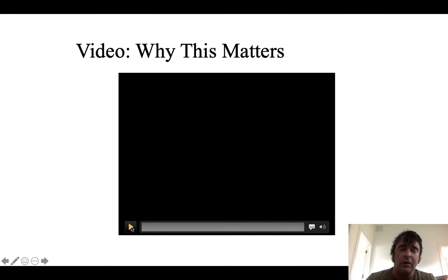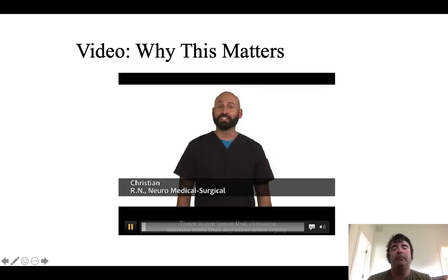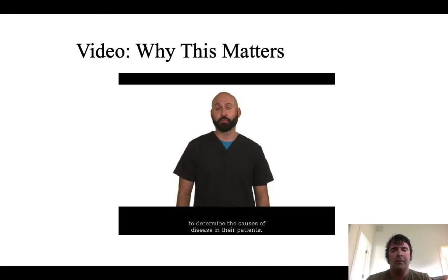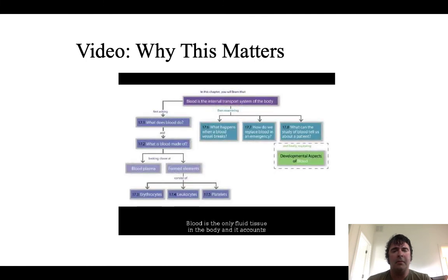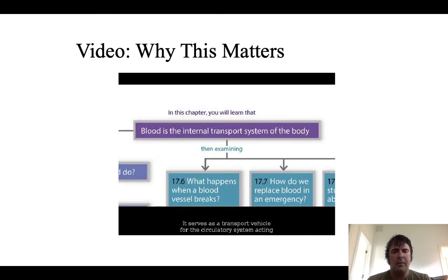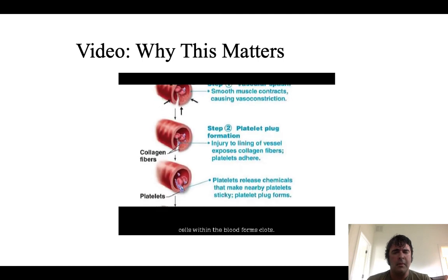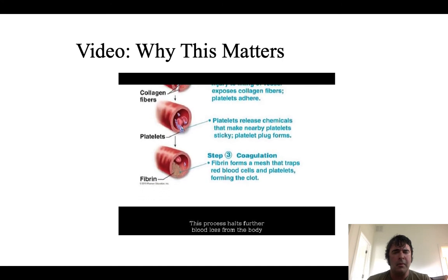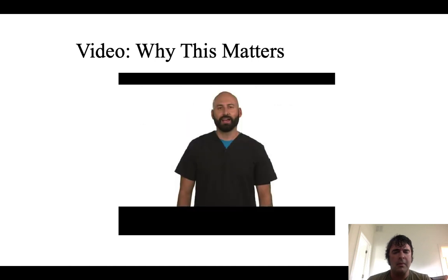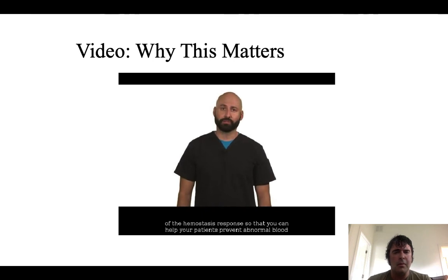There is one tissue that clinicians examine more than any other when determining the causes of disease: blood. Blood is the only fluid tissue in the body and accounts for approximately eight percent of body weight. It delivers oxygen from the lungs and nutrients from the digestive tract to body cells. When a blood vessel is damaged, cells within the blood form clots — a process called the hemostasis response.